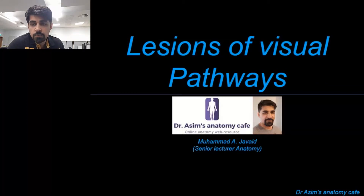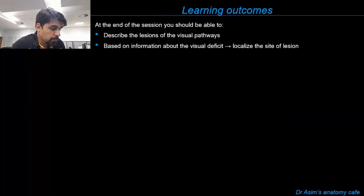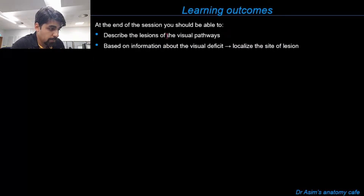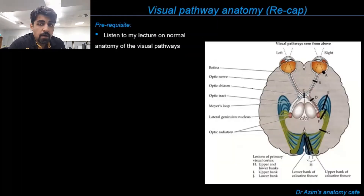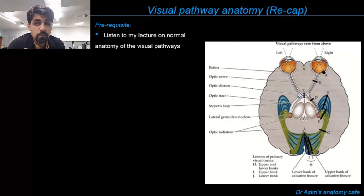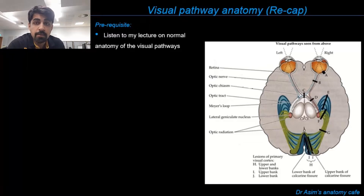Welcome to this lecture on the lesions of the visual pathways. By the end of the session, you should be able to describe the lesions along the course of the visual pathways, and based on the information about deficits in the visual field of a patient, you should be able to localize the lesion anywhere along the course of the visual pathway. I would strongly advise that prior to listening to this lecture, you should listen to my previous lecture on the normal anatomy of the visual pathways. Only then you will be able to appreciate the deficits in the visual field and correlate them with the lesions along the course of the visual pathways.